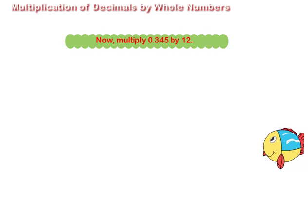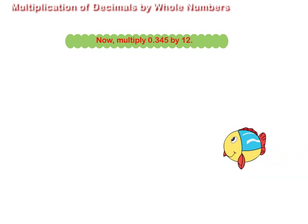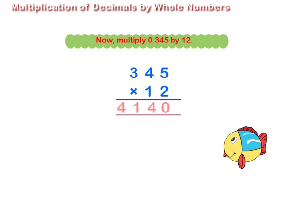Now, multiply 0.345 by 12. First, we multiply 345 by 12. We get 4,140.